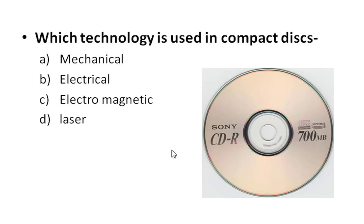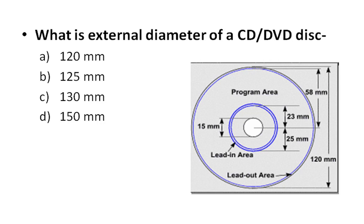What is the external diameter of a CD or DVD disc? The options are 120mm, 125mm, 130mm, and 150mm. The right answer is A — 120mm. This diagram shows the external diameter is 120mm, which includes the program area where data is written, the lead-in area, and the lead-out area.